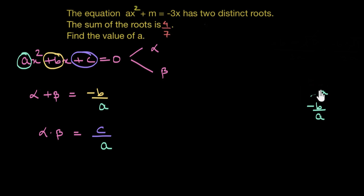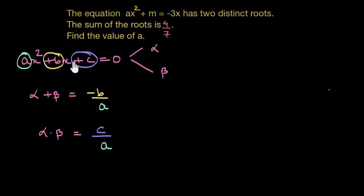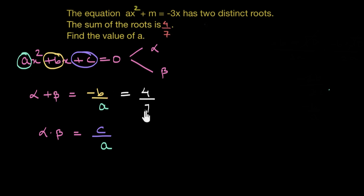Having said that, once we know the relation between roots and the coefficients of a standard quadratic equation, let's now try to solve this question. In the equation, it is given that the sum of the roots is 4 by 7, which means the value alpha plus beta is 4 by 7.